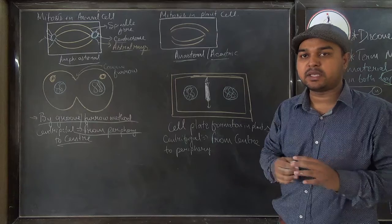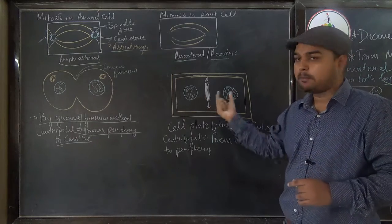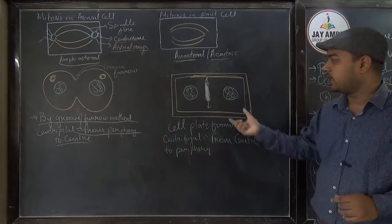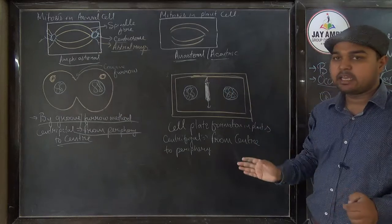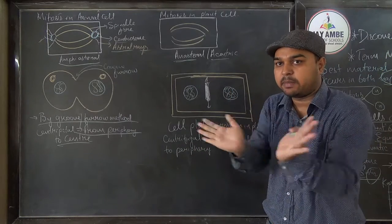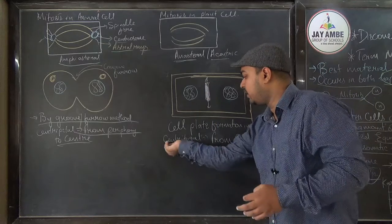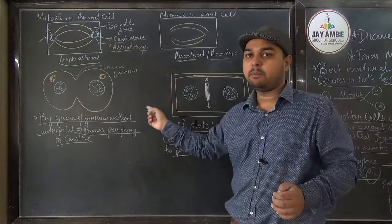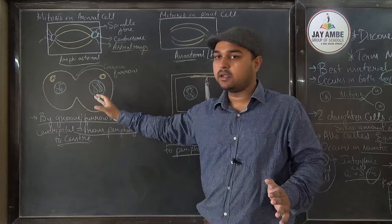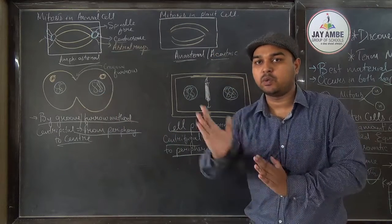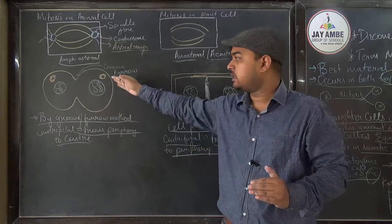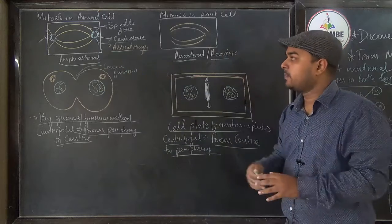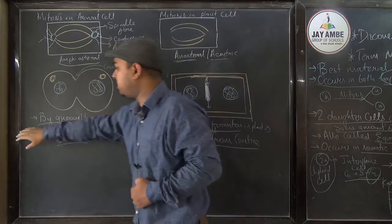In plant cells, since there is a cell wall, cytokinesis occurs by cell plate formation. The cell plate forms at the center and grows outward towards the periphery — that means it is centrifugal in nature. So in plant cells there is centrifugal cell plate formation, while in animal cells there is centripetal furrow formation from periphery to center.